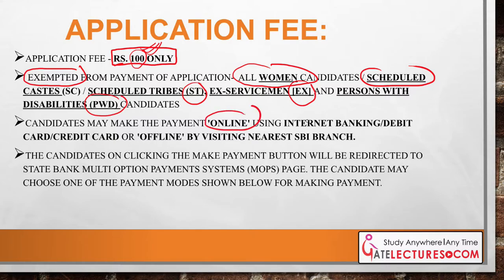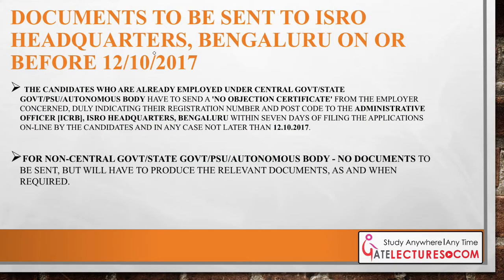Candidates can pay online using internet banking, debit card, or credit card, or pay offline by visiting the nearest SBI branch. You can get your challan and submit the fees there. On clicking the 'Make Payment' button you will be redirected to the State Bank multiple payment options.